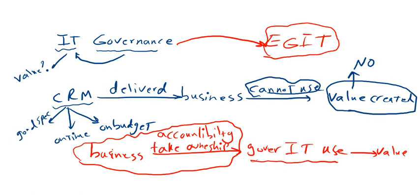You see that the definition has changed from IT governance to Enterprise Governance of IT. That's why it's better to use Enterprise Governance of IT — because IT changes from a cost perspective to an asset in the organization.